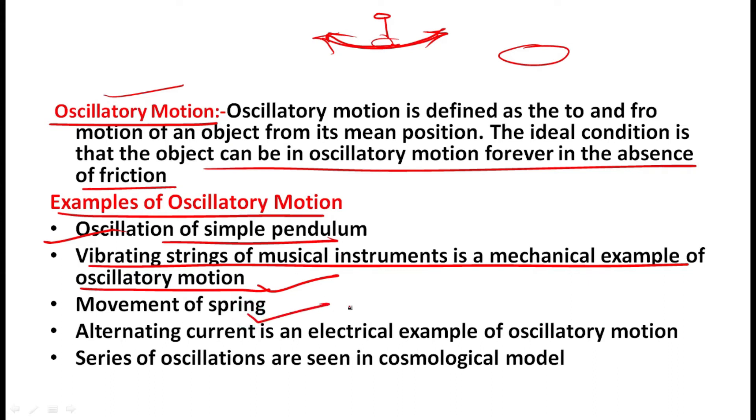Movement of spring. Spring movement is also an example of oscillatory motion. Alternating current is an electrical example of oscillatory motion. AC current is an electrical example of oscillatory motion.